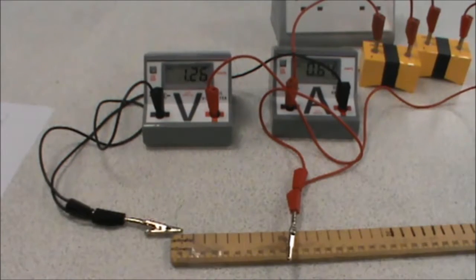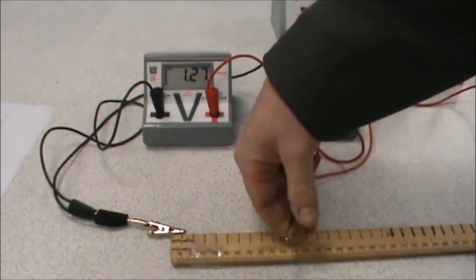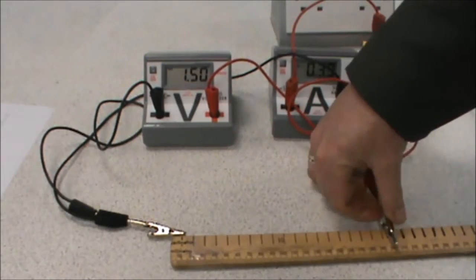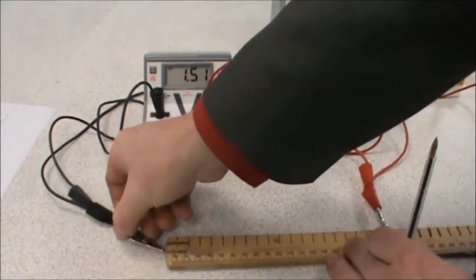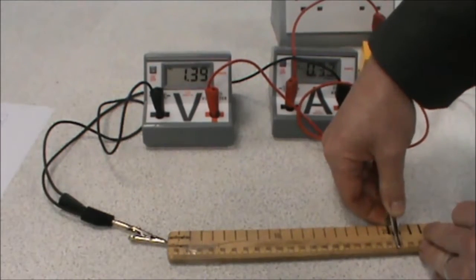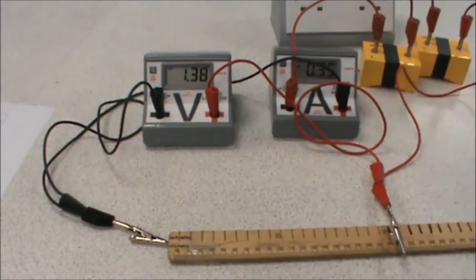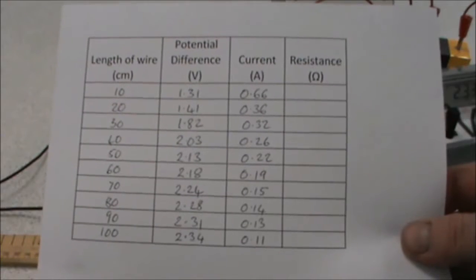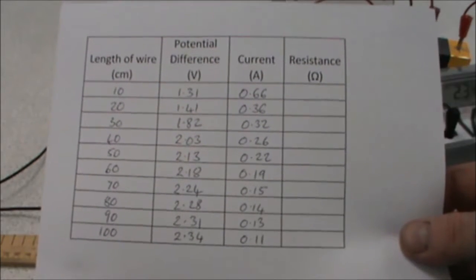We then move the crocodile clip along to 20 centimeters, making sure that we've got a good connection. And we record the voltage and current again, and we repeat until we get to 1 meter. And there we have a completed results table.